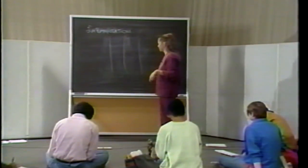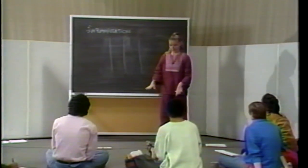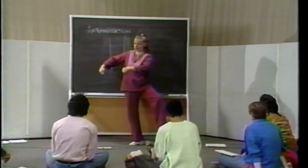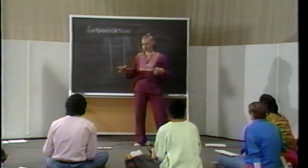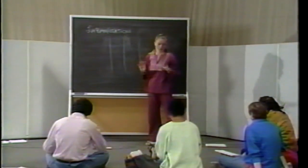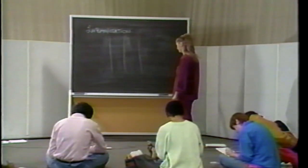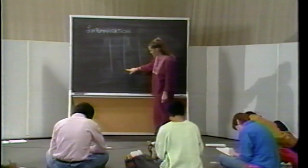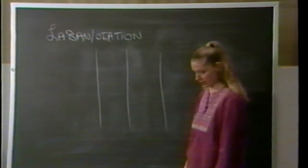The most important information for a dancer to know is how they are supporting themselves — standing on one leg, two legs, sitting, or rolling on the floor. Once you know how you're supporting yourself, you can add any kind of gestures. If you don't know how you're standing, you can't begin to read the rest of the movement detail. So supports are written right along the center line as the most important information. Right supports are along the right side, and left supports along the left side.